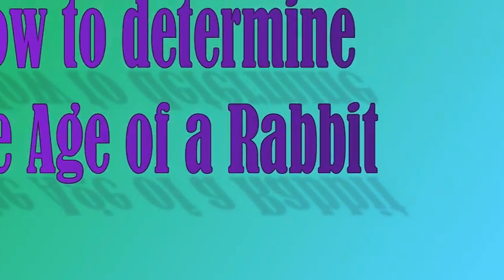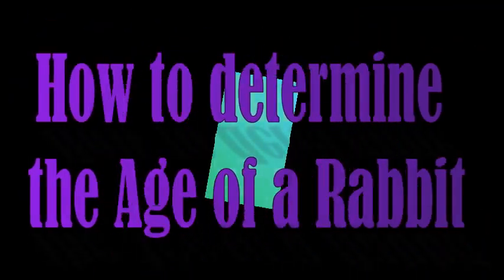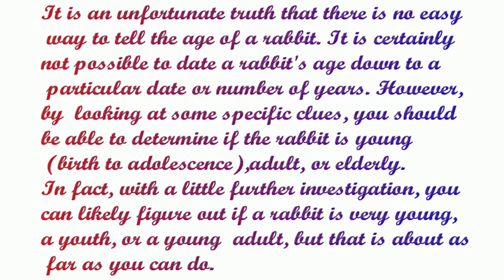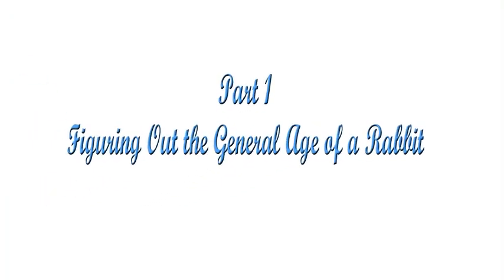How to determine the age of a rabbit. It is an unfortunate truth that there is no easy way to tell the age of a rabbit. It is certainly not possible to date a rabbit's age down to a particular date or number of years. However, by looking at some specific clues, you should be able to determine if the rabbit is young, adult, or elderly. With a little further investigation, you can likely figure out if a rabbit is very young, a youth, or a young adult.